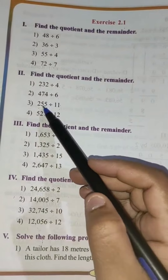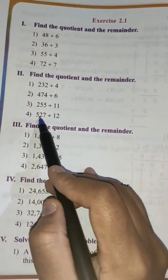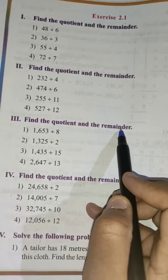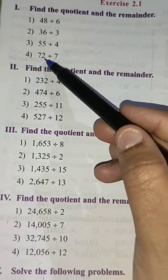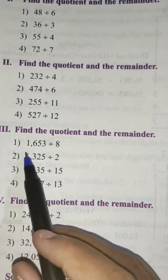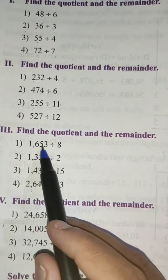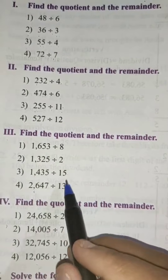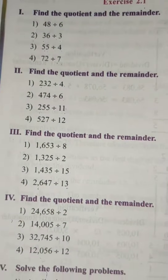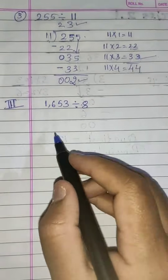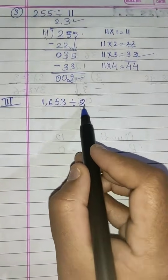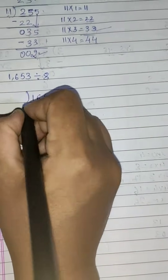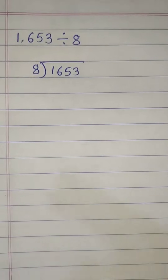We have done the first, second, and third examples. Try to do the fourth one by yourself. Now we come to the third section — find the quotient and the remainder. Here we have been doing two-digit and three-digit numbers; now we are going to use four-digit numbers and divide by a one-digit or two-digit number. We will take the first example: 1,653 divided by 8. Let's write it and divide by 8.